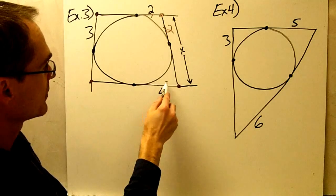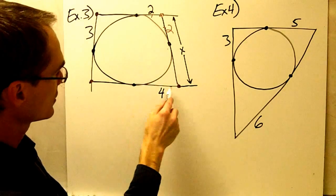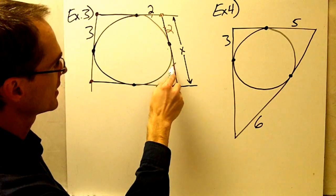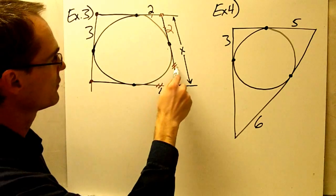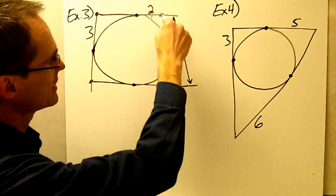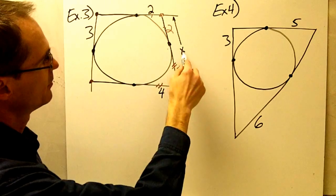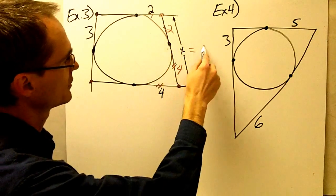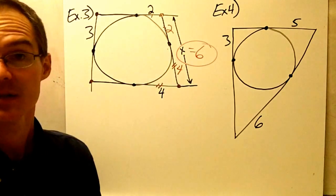I also have this segment and this segment, which are tangent to the circle from this point, which tells me that this segment must be congruent to this segment. So if that's 4, then this is 4. Now I can see that the length of part x here is going to be equal to 2 plus 4, which is 6.